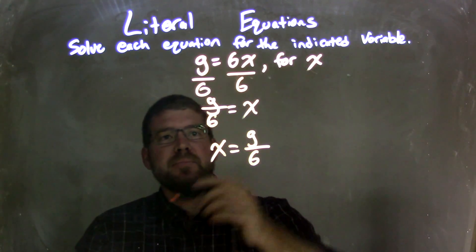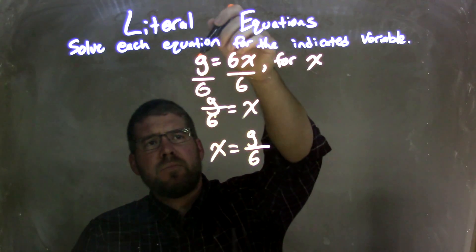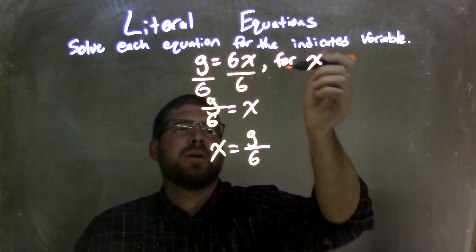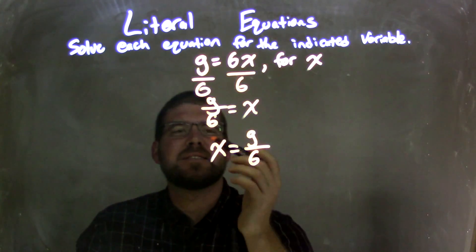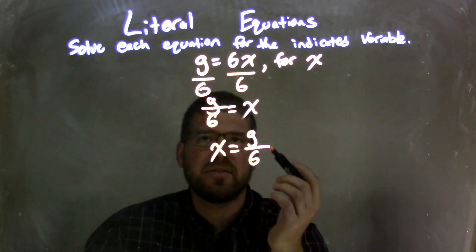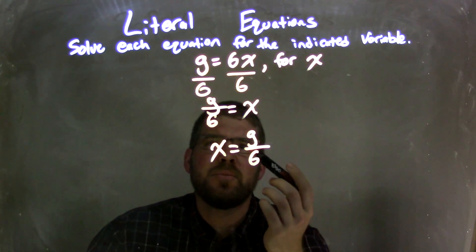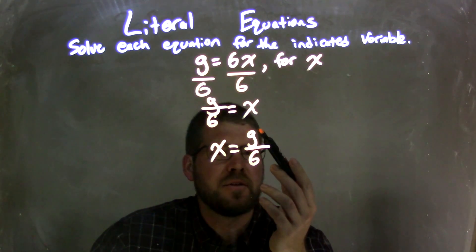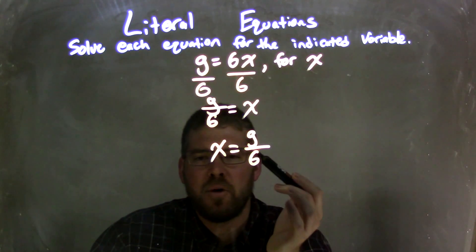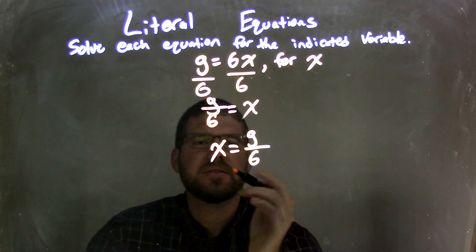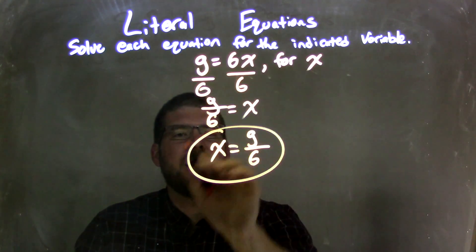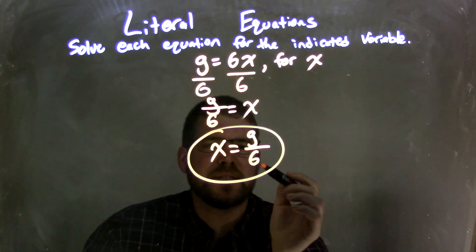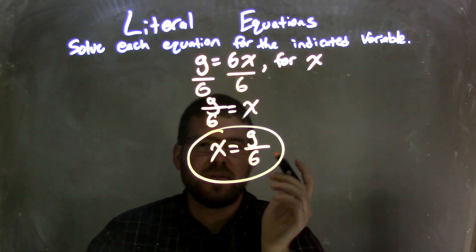Let's recap. I was given g equals 6x, and we needed to solve for x. I divided both sides by 6, which left me with g over 6 equals x. I isolated x and rewrote it to come first, so the final answer is x equals g over 6.